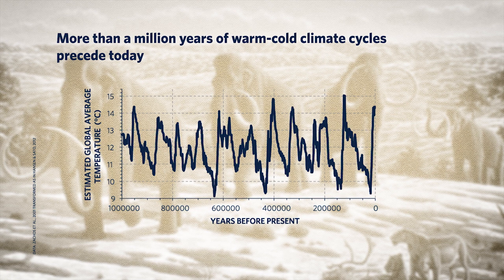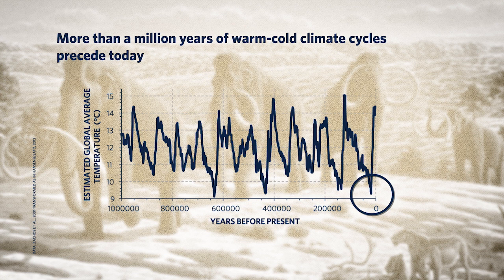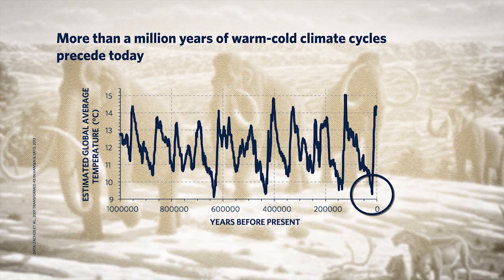For example, the most recent ice age, 20,000 years ago — that valley in the data closest to the right — was about 5 degrees Celsius cooler than Earth is today. That doesn't sound like much, but that was a time when Canada and parts of Northern Europe were covered with ice. Sea levels were about 120 meters lower than today, and woolly mammoths roamed around.